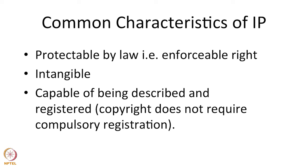So the first thing about intellectual property rights is that they are enforceable. The second thing — they are capable of being described and concomitantly being registered. They can be registered, which brings in a whole lot of things: there is an authority which analyzes, scrutinizes, and verifies the right with other things, and then grants you a title. The process of registration in patent law is called patent prosecution and happens at the patent office. Only when the patent specification goes through the process of prosecution does a person get a grant — meaning a title of patent.